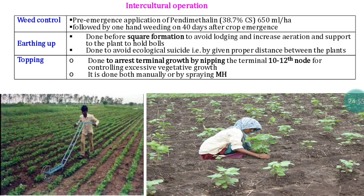For weed control, pentimethrin at 650 ml per hectare is applied as a pre-emergence herbicide. After that, one hand weeding is done at 40 to 45 days after sowing. To prevent lodging of plants, earthing-up operations are done. Another important intercultural operation is topping — nipping of the apical bud — to arrest vegetative growth of the plant after certain stages. If cotton is allowed to continue vegetative growth beyond a point, a lot of energy is wasted on vegetative growth alone.